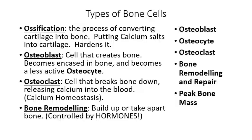Bone remodeling is the collective term for putting bone tissue together versus taking it apart. This process is controlled by hormones produced by the endocrine system. Whether osteoclasts or osteoblasts are working harder is controlled by hormones. As we get older, those hormones begin to diminish, we produce less growth-promoting hormones for bone, and the bones become thinner and more brittle as a result — which is a consequence of the slowing down of the endocrine system.